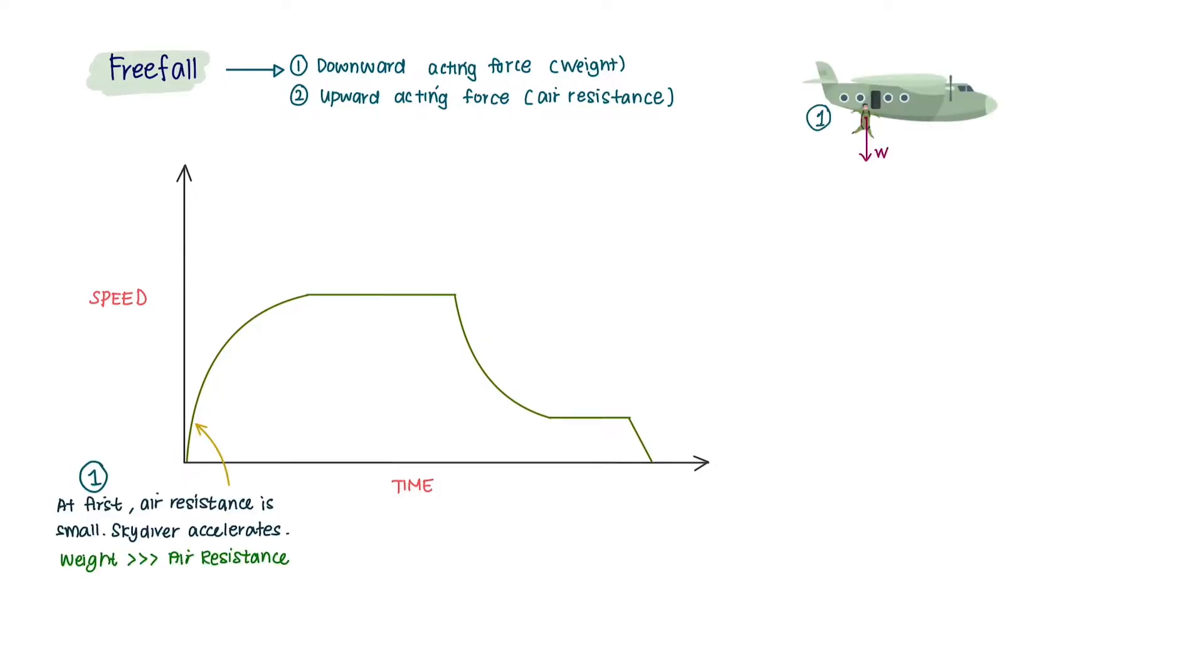Initially, when the skydiver jumps off the plane, the upward air resistance is very small because the skydiver isn't falling very quickly. Therefore, there are unbalanced forces on the skydiver initially and he accelerates.